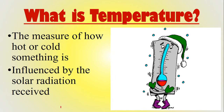So what is temperature? Temperature is the measure of how hot or cold something is. Think about it — is it hot or cold in your house right now? Is it hot or cold outside? Temperature on Earth is influenced by solar radiation that is received. The Earth is heated by solar radiation, and we talk about how that radiation gets to Earth in the astronomy sections of these videos.